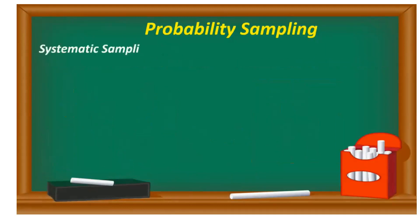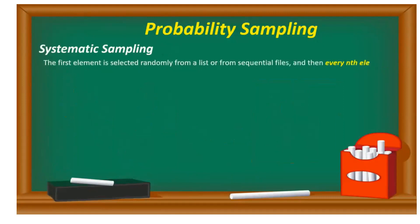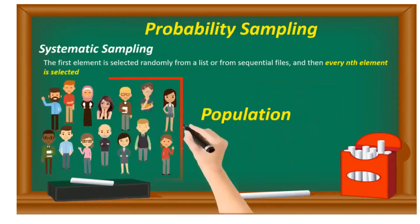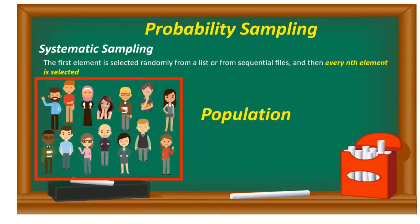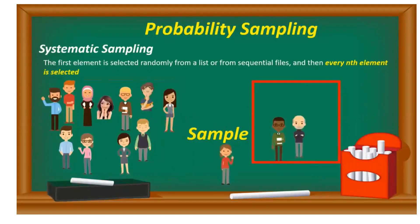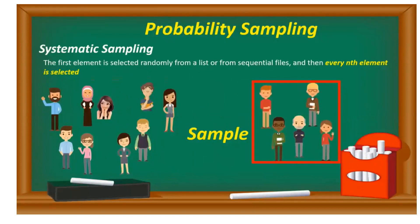Next is systematic sampling. In systematic sampling, the first element is selected randomly from a list or from sequential files, and then every nth element is selected. For example, with a population representing a broad category of people, we select the first sample randomly and then apply the nth element rule. In this case we pick every third member on the sequence from the population to represent the systematic sample. This method is different from simple random sampling since every possible sample of nth elements is not likely to have equal probability.